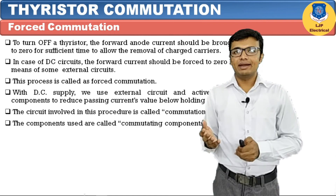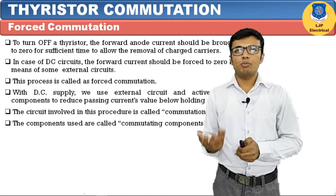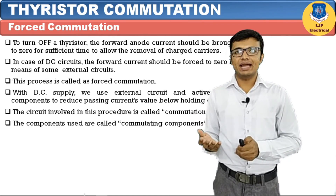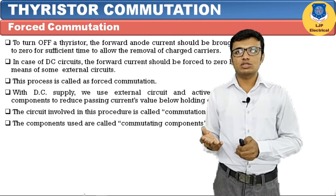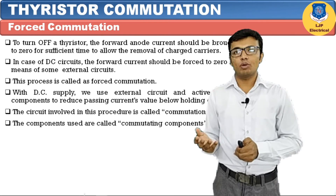In forced commutation, we also have to reduce the anode current of the SCR below the holding current to turn off the SCR. It requires external components like R, L, and C, which are called the commutating components.